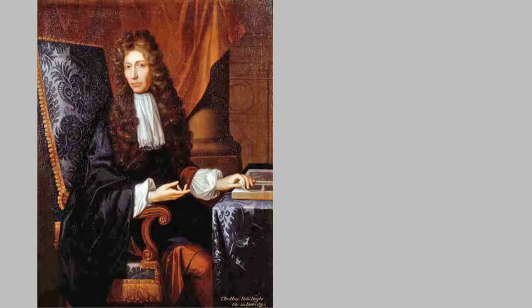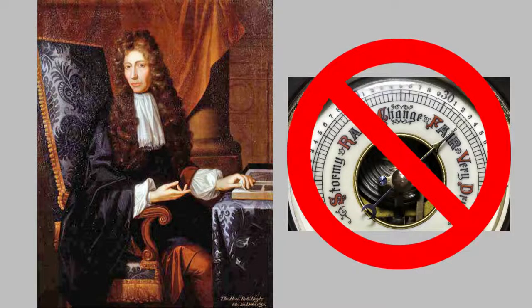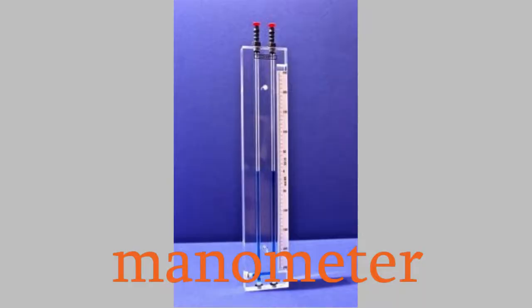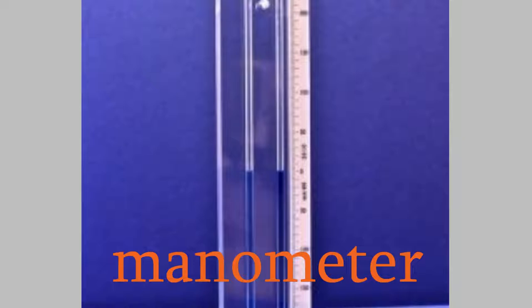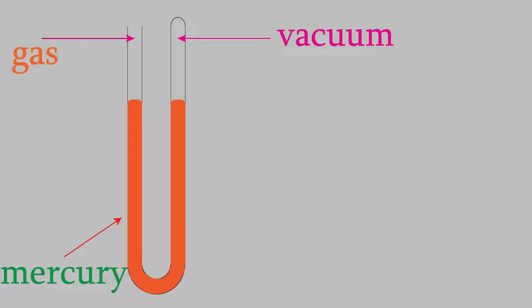What Boyle invented wasn't a barometer. Instead, in 1660, he invented something called a manometer, which was an earlier version of the same kind of instrument. A manometer is a U-shaped tube that's sealed at one end, and the tube contains mercury. On the sealed end of the tube, there's a vacuum, so there's nothing, not even air, on that side. The other side of the tube is connected to a container of gas that we want to know the pressure of.